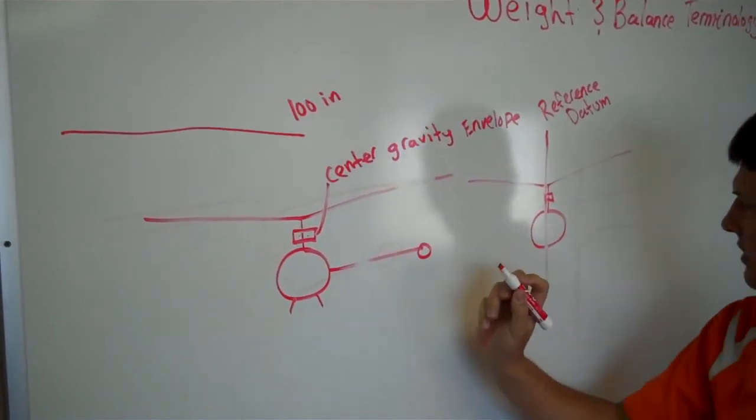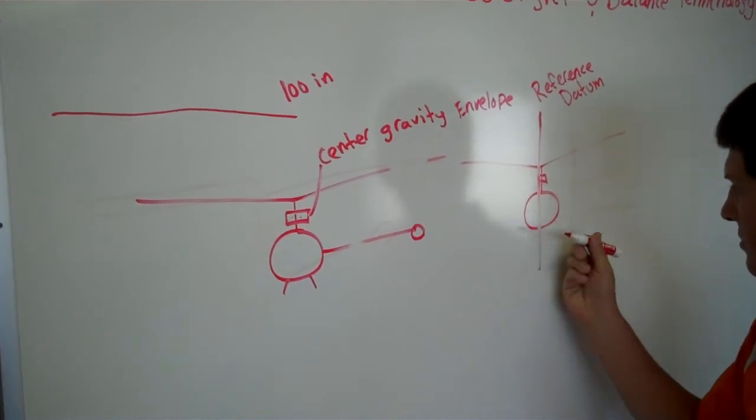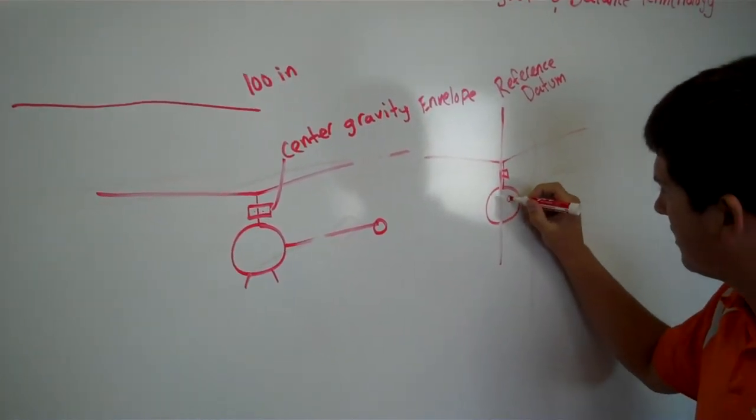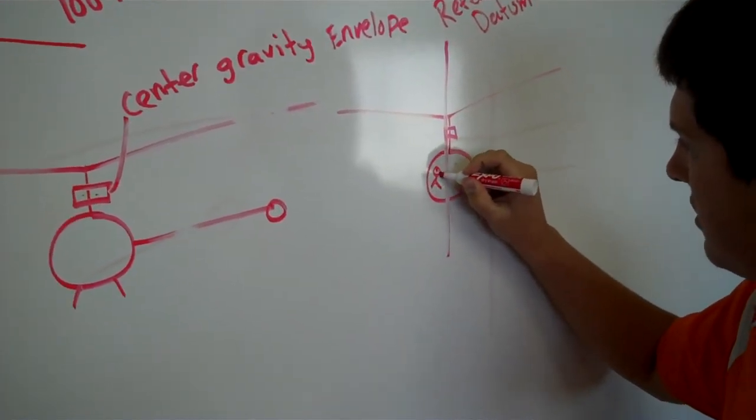And then the measurement left and right of the reference datum is the arm. So let's put our pilot in here. He'll be on this side.